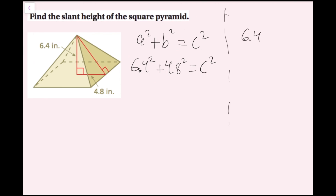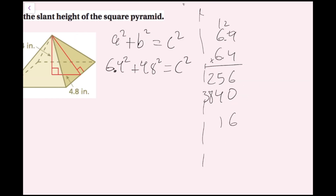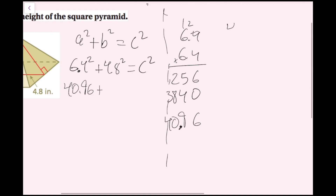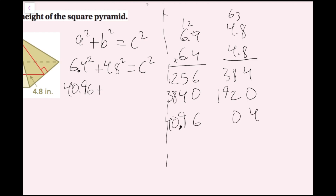So I get 6.4 squared plus 4.8 squared equals C squared. Doing 6.4 times 6.4: I get 40.96. Then 4.8 times 4.8 gives me 23.04. So I have 40.96 plus 23.04 equals C squared.